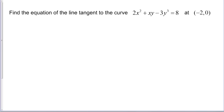Here we have an implicit relationship — this curve written here. If you were to look at this curve on a graph, you would see that it's not a function; it doesn't pass a vertical line test. If we tried to solve this relationship for y, we wouldn't be able to. This is an implicit relationship, so to take the derivative we're going to have to use the process of implicit differentiation.